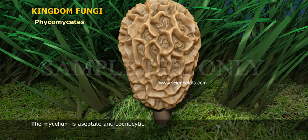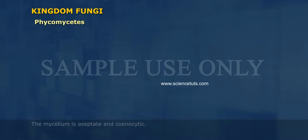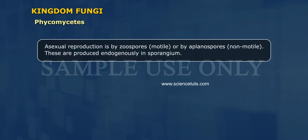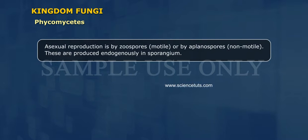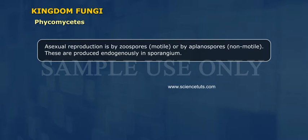The mycelium is aseptate and coenocytic. Asexual reproduction is by zoospores, which are motile, or by aplanospores, which are non-motile. These are produced endogenously in sporangium.